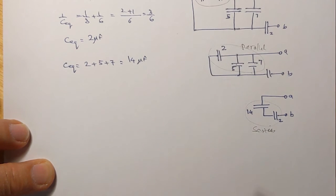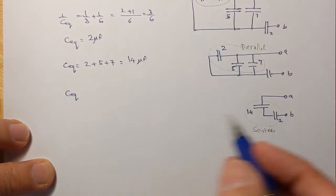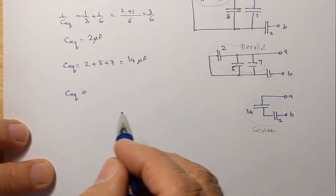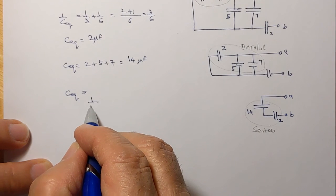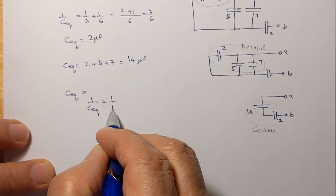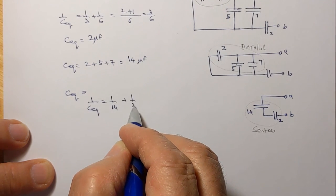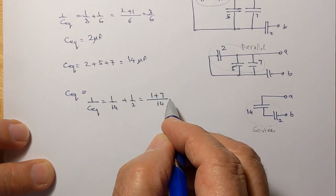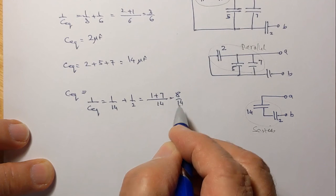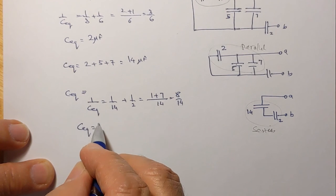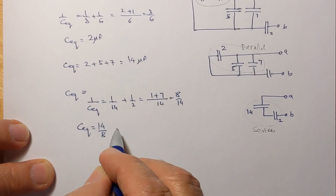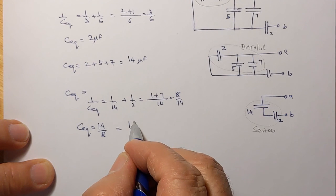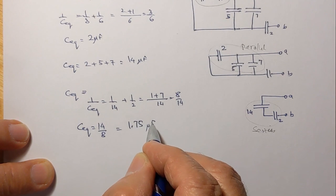And so we say that the C equivalent of these two, which now is for the whole circuit also, becomes, well, we have to use this equation: C equivalent, 1 over 14 plus 1 over 2. That's 1 plus 7, 8 over 14, and therefore C equivalent is 14 over 8, which is 1.75 microfarads.